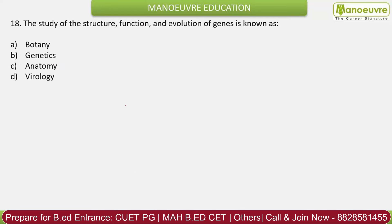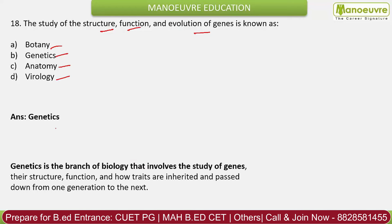Question 18: The correct answer is genetics. Genetics is the branch of biology that involves the study of genes, their structure and function, and how traits are inherited and passed down from one generation to the next.